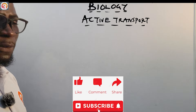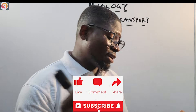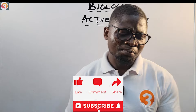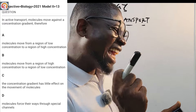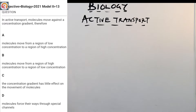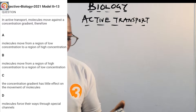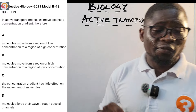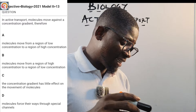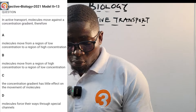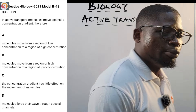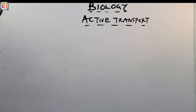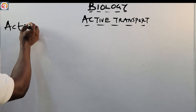If you have not liked this video, please like it. If you have not subscribed to this channel, subscribe and keep sharing these videos. Now, active transport — what is active transport? Before I talk about that, let's see a question from the Old School Jam app. This is a 2021 question number 13: In active transport, molecules move against a concentration gradient. Therefore, they say: A) molecules move from a region of low concentration to a region of high concentration; B) from high to low concentration; C) the concentration gradient has little effect; D) molecules force their way through special channels.